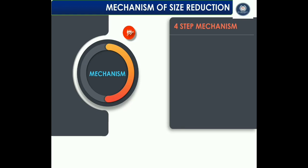The first step is impact. This involves the operation of hammers or bars at high speed. When a lump of material strikes the rotating hammer, the material splits apart, and this action continues until particles of the required size are obtained — for example, a hammer mill. Impact also occurs when a moving particle strikes against a stationary surface, or when particles moving at high speed collide with each other to produce smaller particles, achieving size reduction — for example, a fluid energy mill.